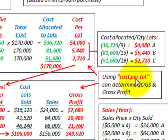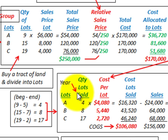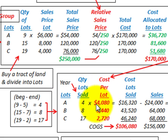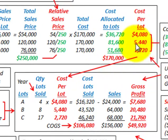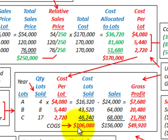Using the cost per lot, we can determine cost of goods sold. For lot A, we started with 9 lots, ended with 5, so we sold 4. Four lots times $4,080 cost per lot gives a cost of lots sold of $16,320. We do the same for B and C. Summing those amounts, our total cost of goods sold is $106,080.